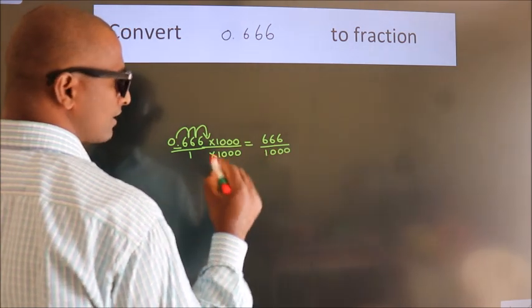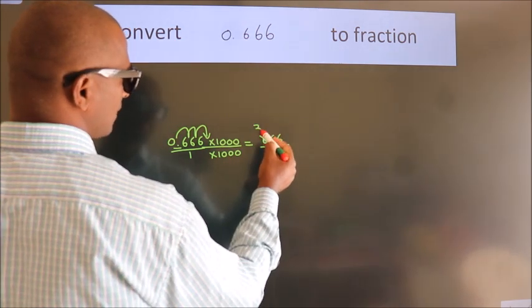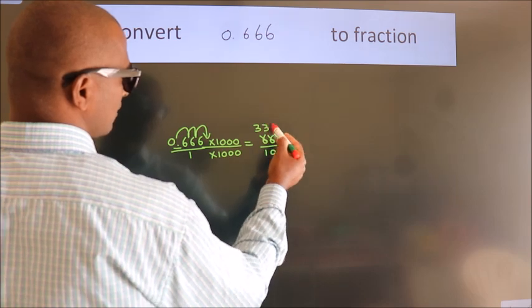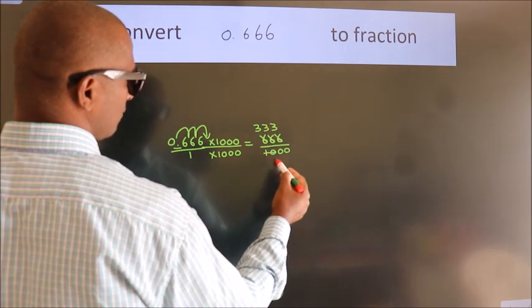Now I cancel with 2. Two 3s, two 3s, two 3s, two 5s.